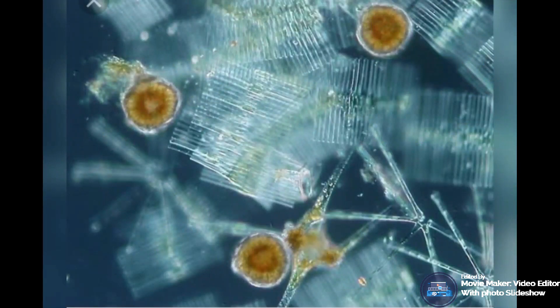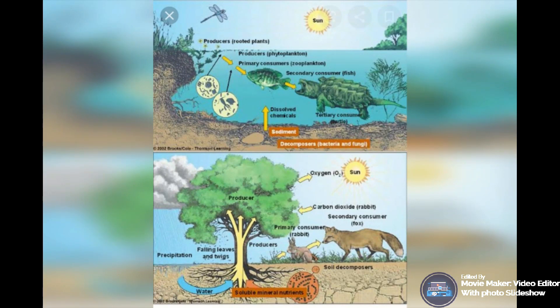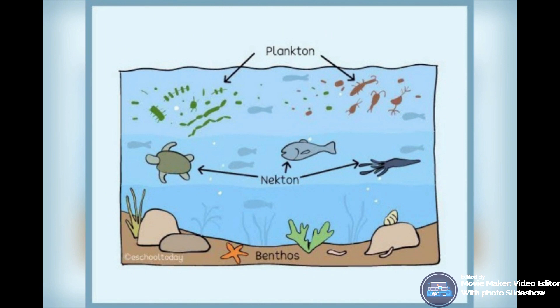Aquatic ecosystems perform many important environmental functions, such as recycling nutrients, purifying water, attenuating floods, recharging groundwater, and providing habitats for wildlife. Some bacteria serve as food for marine organisms, make nutrients available to other organisms by breaking down waste and dead matter, or may destroy specific toxic chemicals found in ocean water.